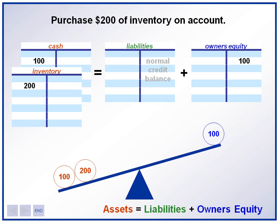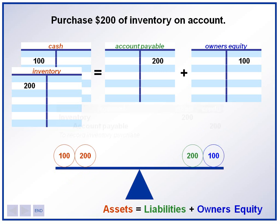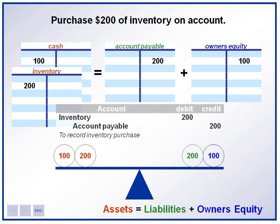However, our accounting equation is again out of balance. Now our assets are $200 greater than our liabilities and our owner's equity. To balance this, we will make a $200 credit to accounts payable. Because accounts payable is a liability account, meaning that we owe our vendors money, it will be increased by $200 with a credit. When we increase accounts payable, our accounting equation comes back into balance. Our journal entry for this transaction would be to debit inventory for $200 and credit accounts payable for $200. We also write a memo reminding us that this was for an inventory purchase.